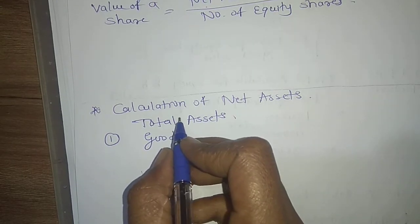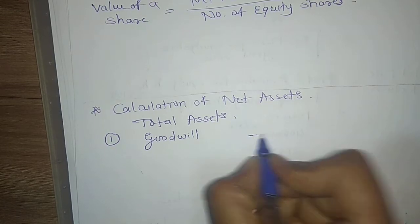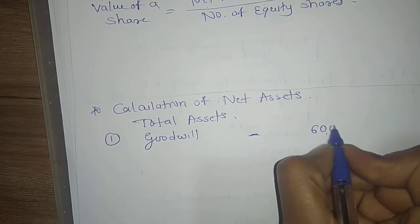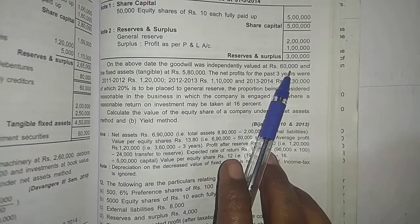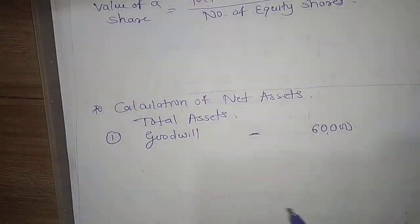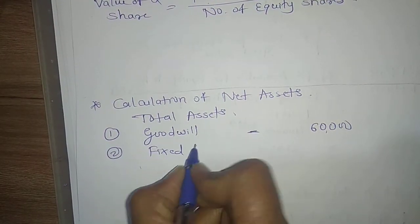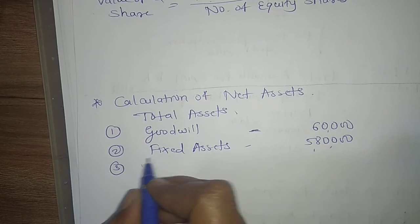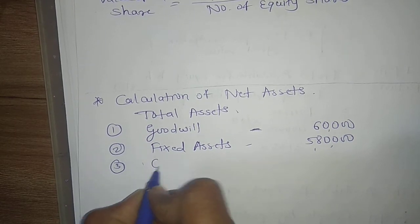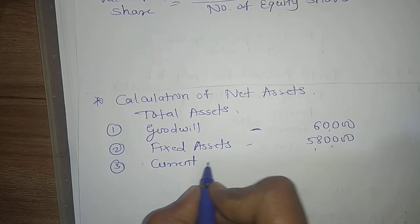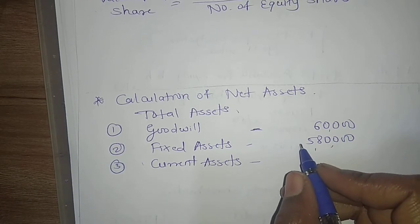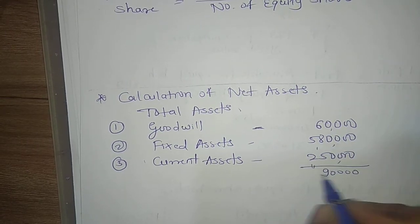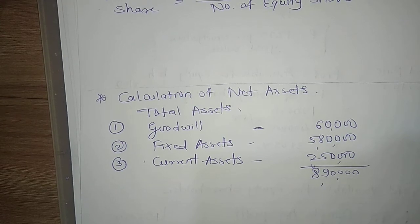First, the intangible asset — goodwill — its market value is 60,000. Next item is fixed assets at 5 lakh 80,000. After this, current assets do not have a market value, so I am taking the book value that is 2 lakh 50,000. The total of these is 8 lakh 90,000 — this is total assets.